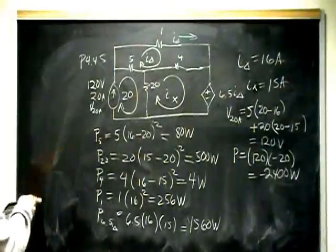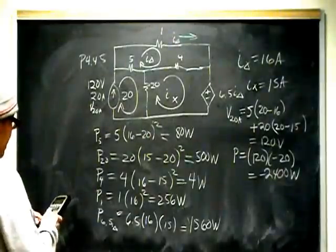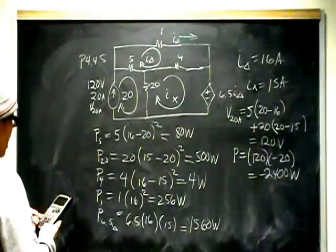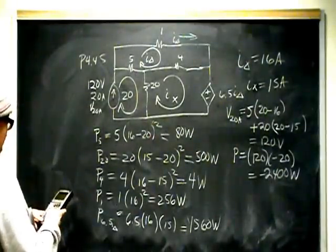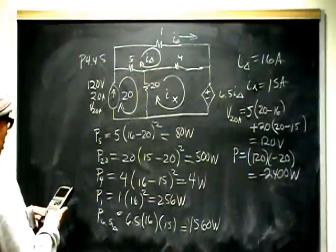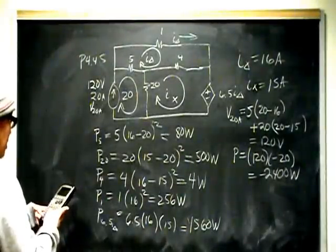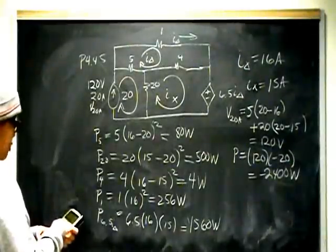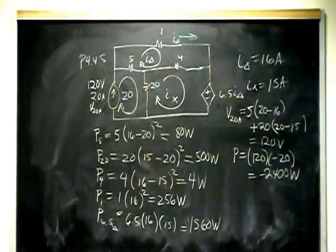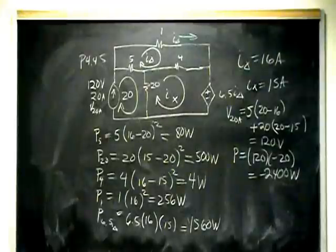And so the sum of the absorbing needs to equal the sum of the delivering. So you go 80 plus 500 plus 4 plus 256 plus 1560, and it adds up to 2400. So power absorbed equals power delivered, and case closed.